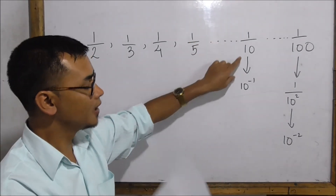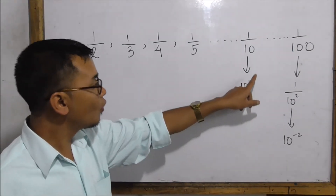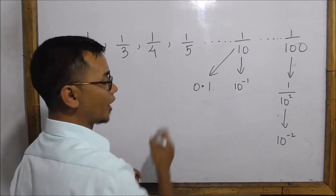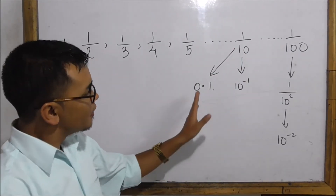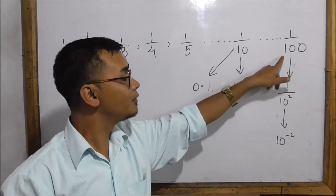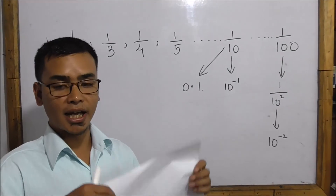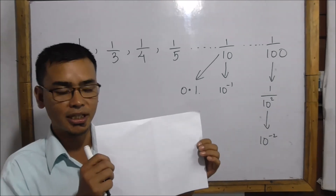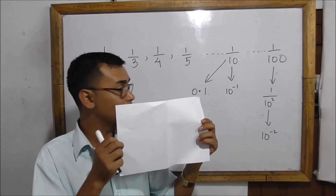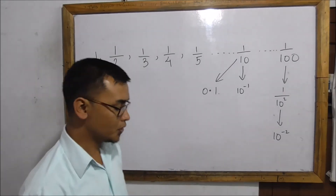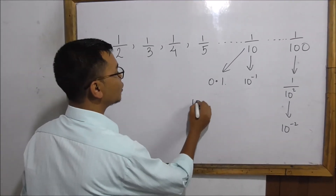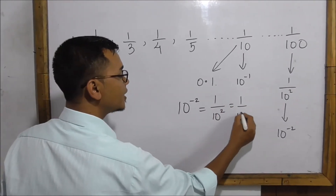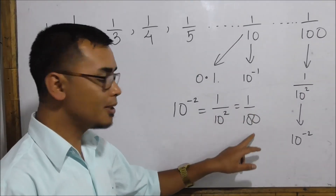1 divided by 10 is 10 to the power minus 1, or 10 inverse 1, so this is 0.1. 1 divided by 10 squared is equal to 1 divided by 100.